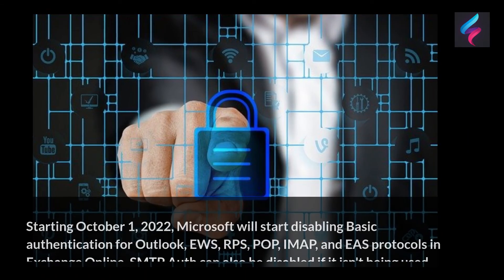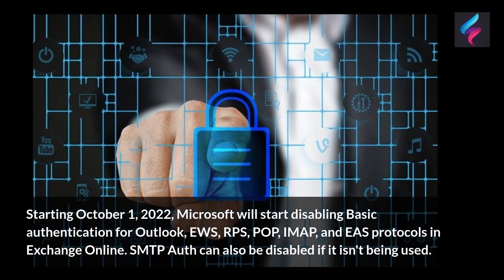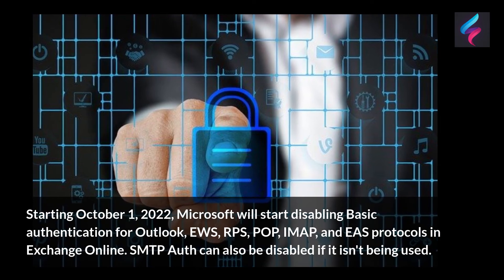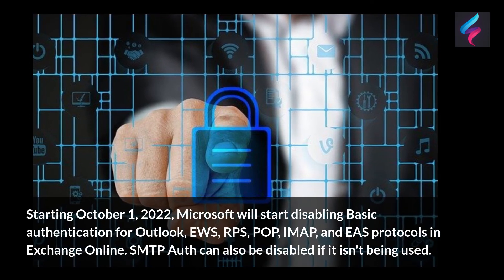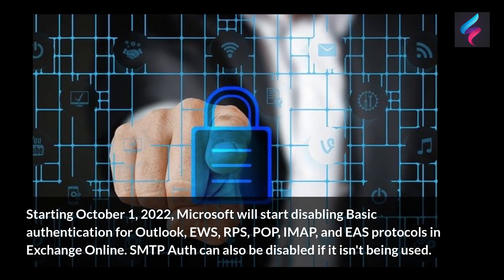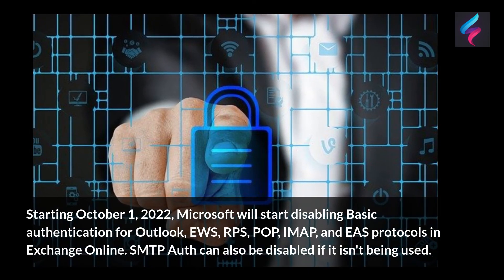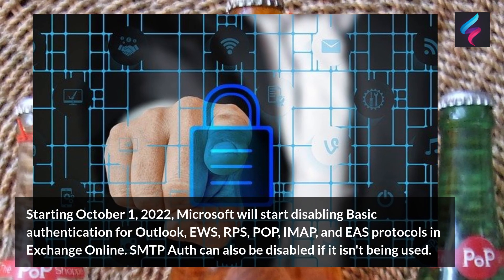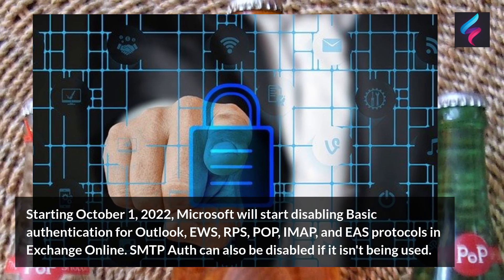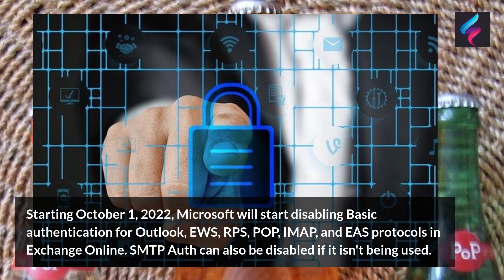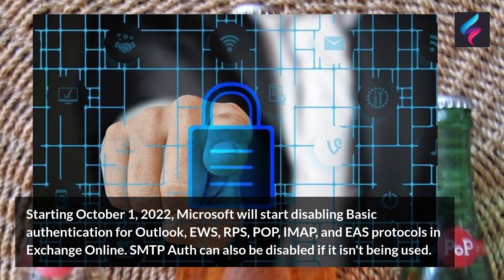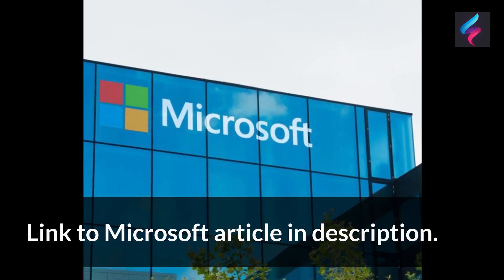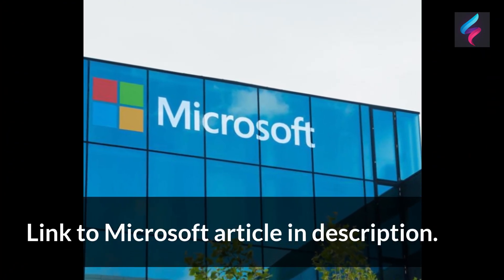Starting October 1, 2022, Microsoft will start disabling Basic Authentication for Outlook, EWS, RPS, POP, IMAP, and EASE protocols in Exchange Online. SMTP Auth can also be disabled if it isn't being used. A link to the Microsoft article is in the description.